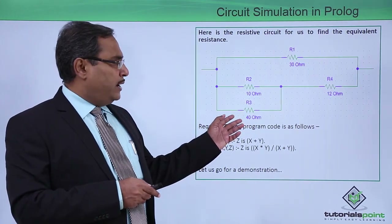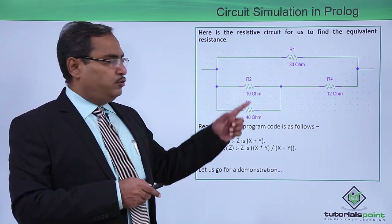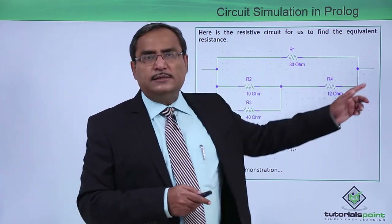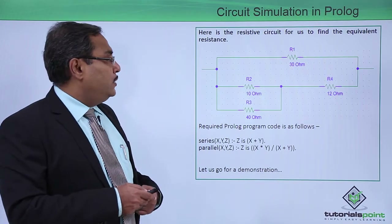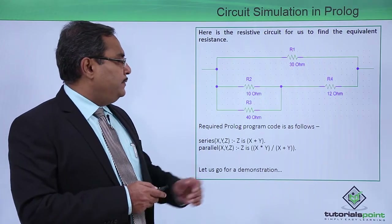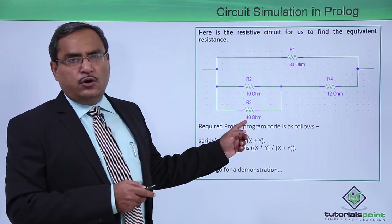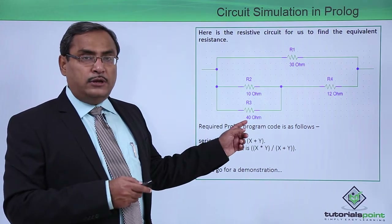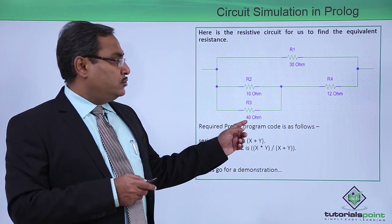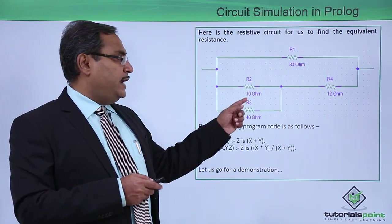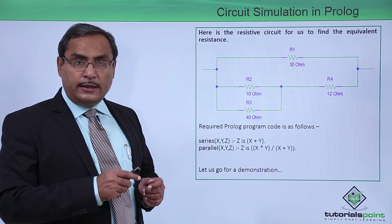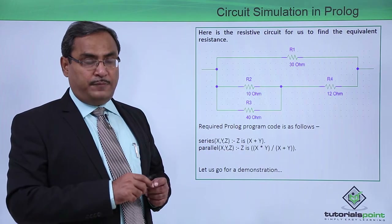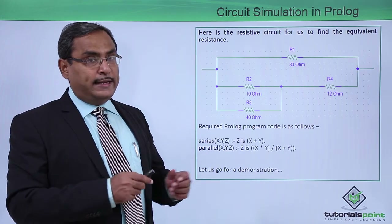We have 1, 2, 3, 4 resistances and 2 terminal points, let them be A and B. Now, the 10 ohm and 40 ohm resistances will be in parallel. To calculate the equivalent resistance, that is 10 into 40 divided by 10 plus 40, so 400 by 50, we are getting 8 ohm.